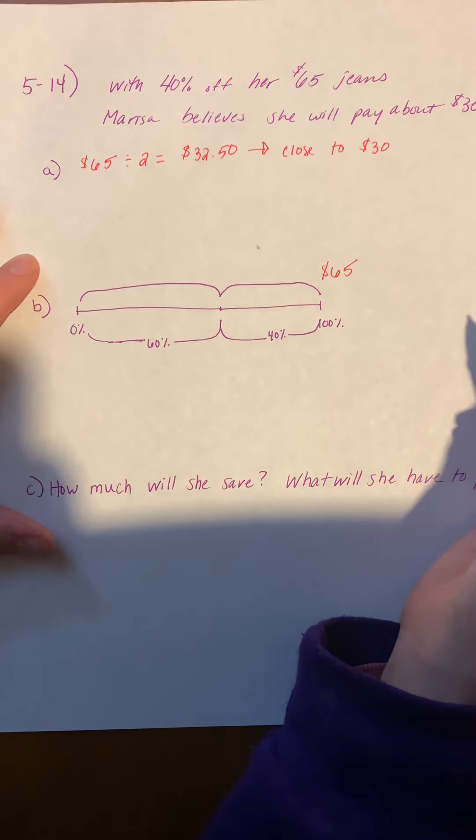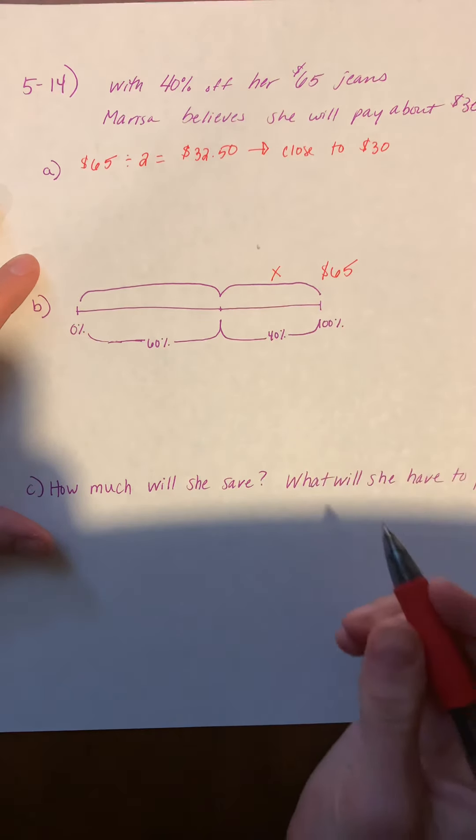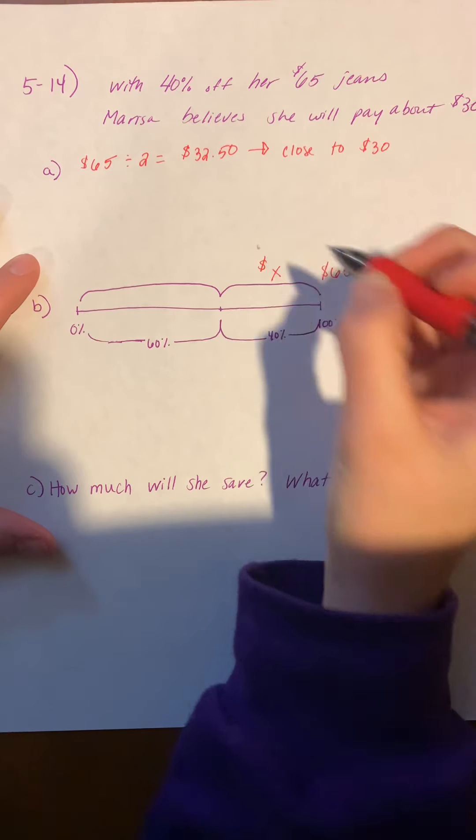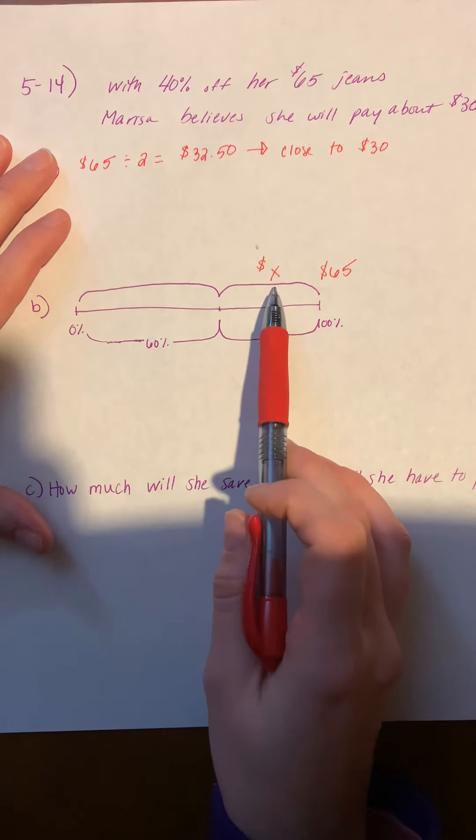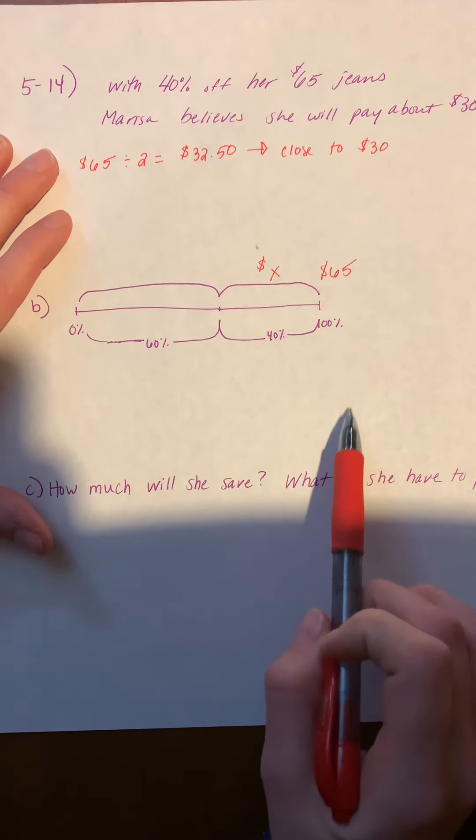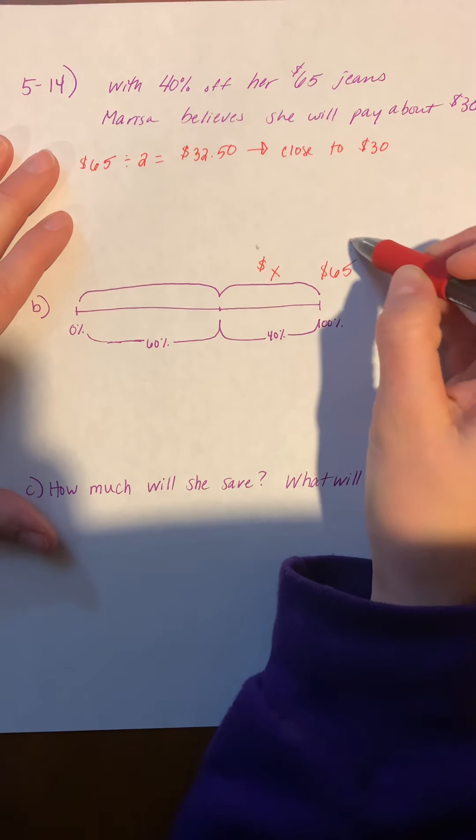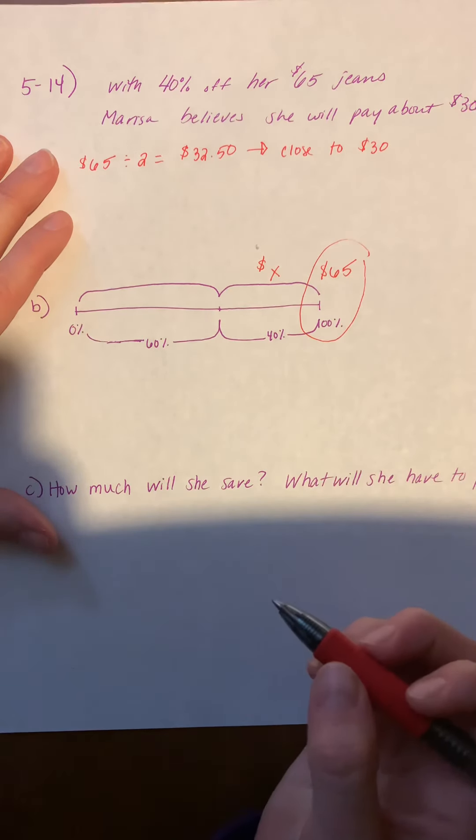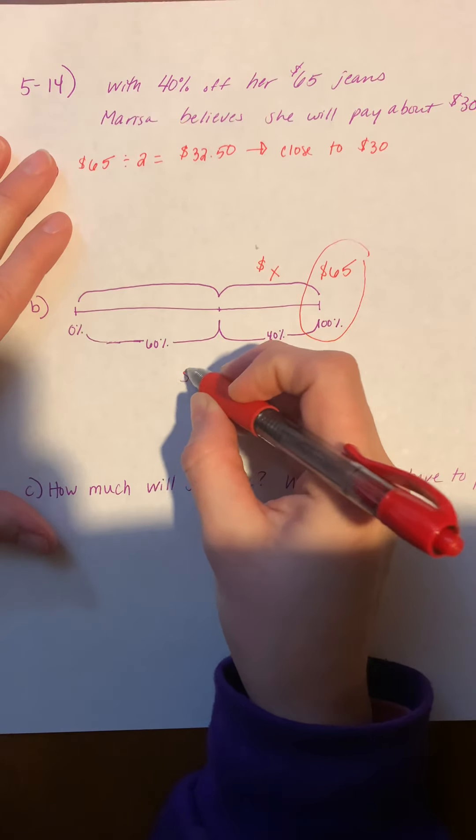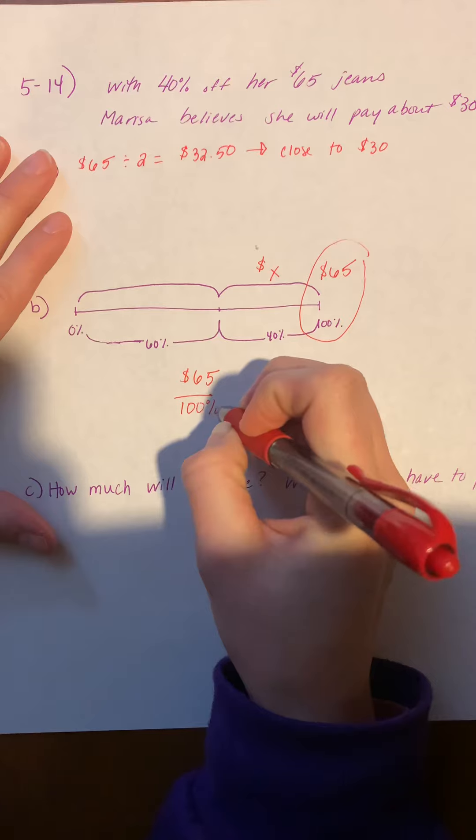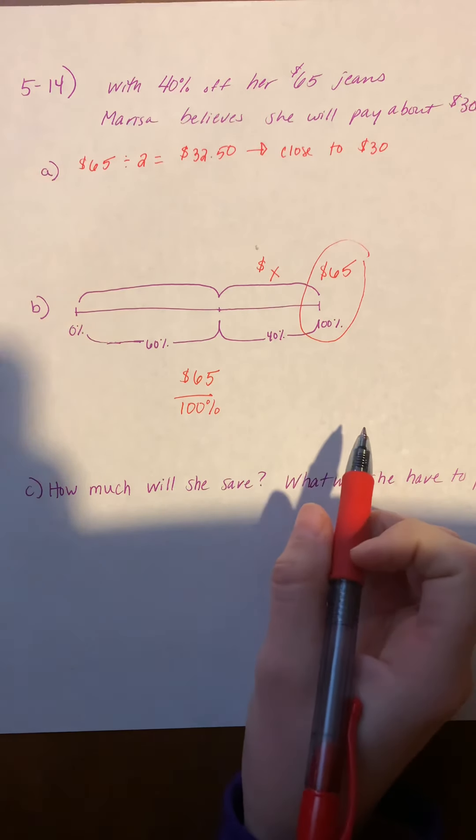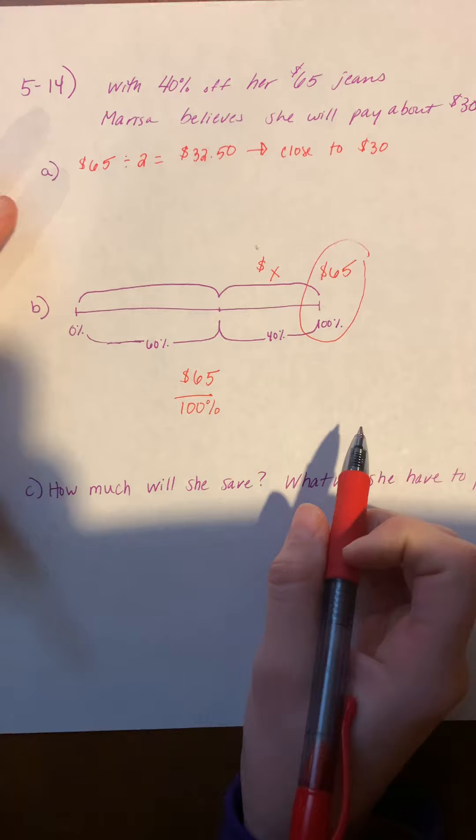So since I know that we're getting 40% off, I don't know what that discount is going to end up becoming. So that's the missing value that I have. Now, if you remember from yesterday, when we were setting up these proportions, we always want to have wherever my X is being on the right-hand side. So I see this fraction here is what I'm going to start with. So I'm going to be taking my $65 over my 100%.